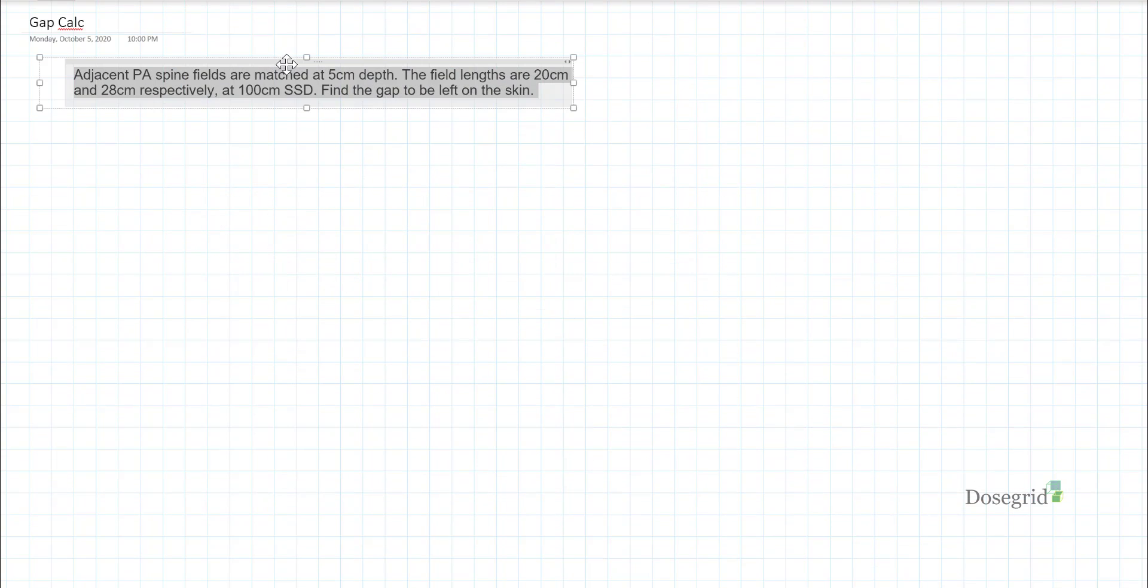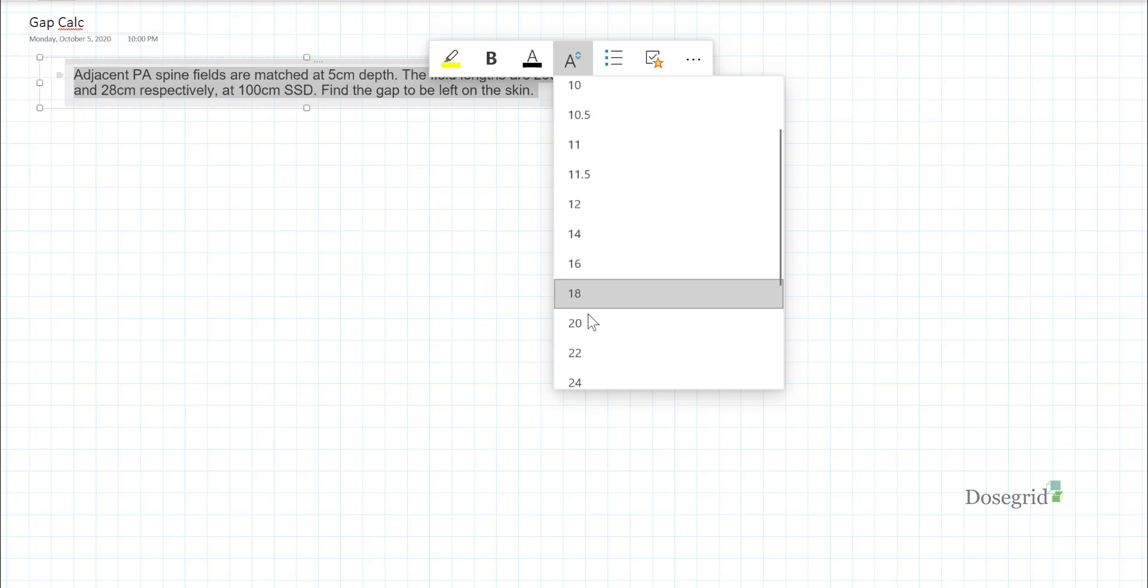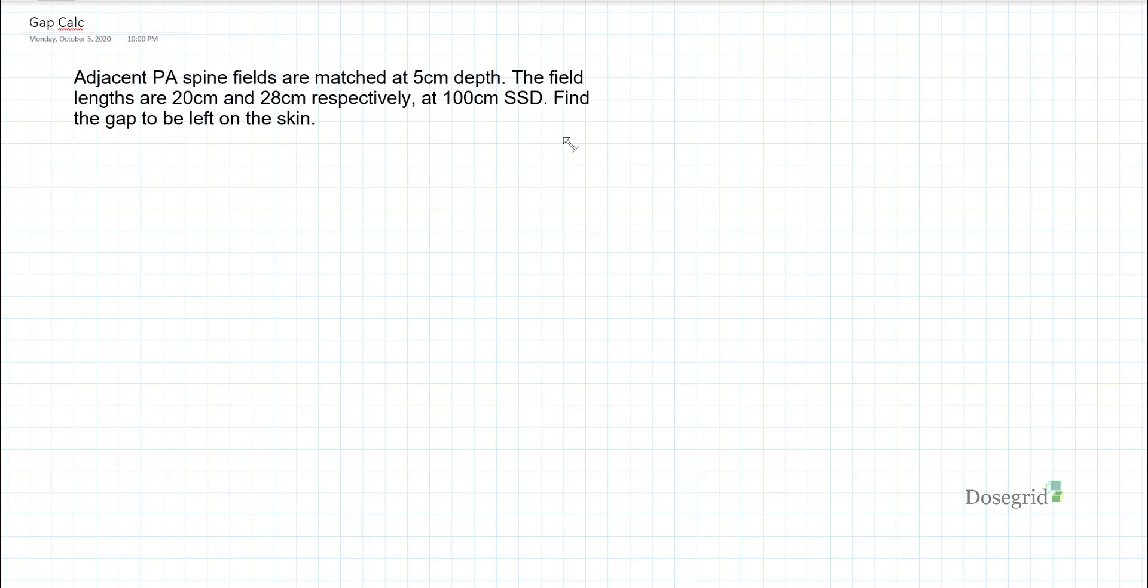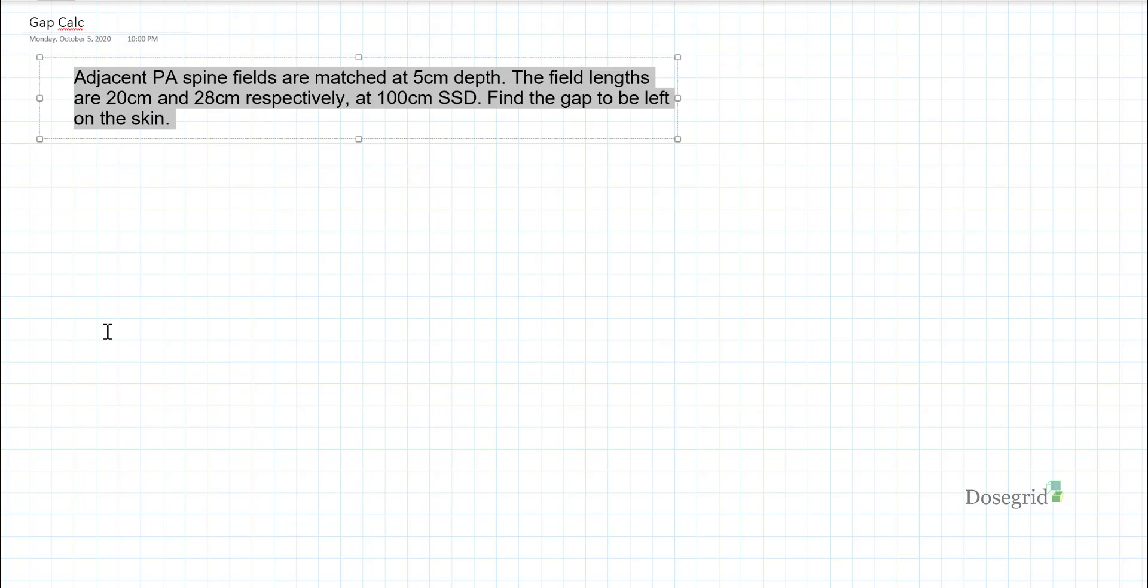Consider this example. Adjacent PA spine fields are matched at 5 cm depth. Their field lengths are 20 and 28 cm at 100 SSD. Find the gap.